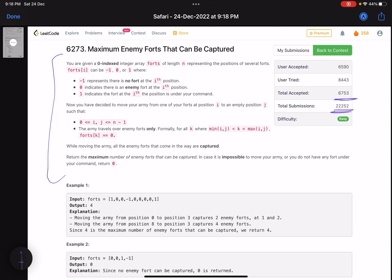The problem name is Maximum Enemy Forts That Can Be Captured. The problem statement says that you are given a zero-indexed integer array forts of length n representing the positions of several forts. What are the three values that forts can have? It can be -1, 0, or 1.